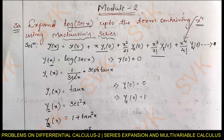Now, differentiating y with respect to x, we get y₁. The derivative of log(sec x) is (1/sec x)·(sec x · tan x), and the sec x terms cancel, leaving tan x. So y₁ = tan x. Putting x = 0, we get y₁(0) = tan 0 = 0.